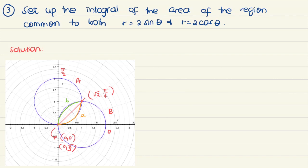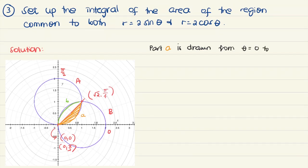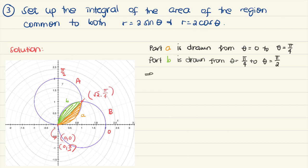Part A is drawn from 0 to pi over 4, following how circle A is drawn. Part B is drawn from pi over 4 to pi over 2, following how circle B is drawn. Part A and part B together make up the whole region.